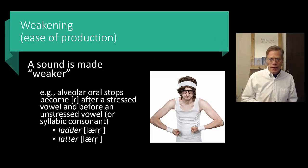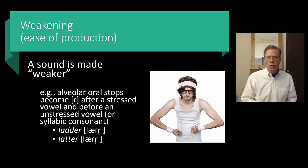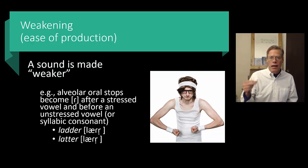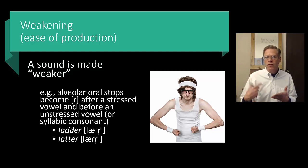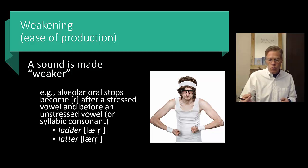Weakening is the inverse — this is probably an ease of production phenomenon. Some sounds are stronger than others, so weakening is where we make a sound weaker. For example, when we voice a consonant that was underlyingly unvoiced. A flap is going to be weaker than an alveolar stop because it's voiced as well.